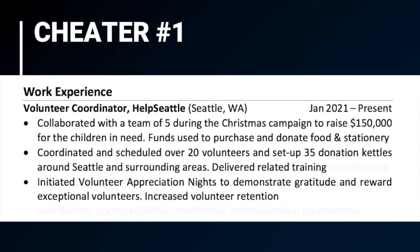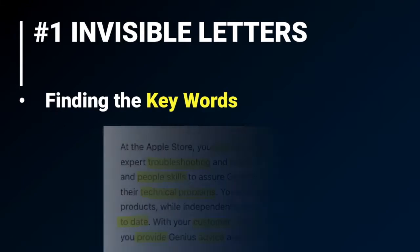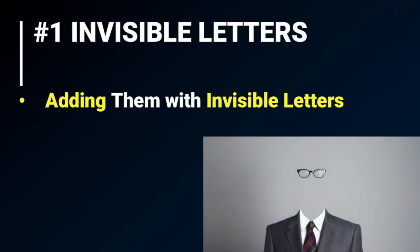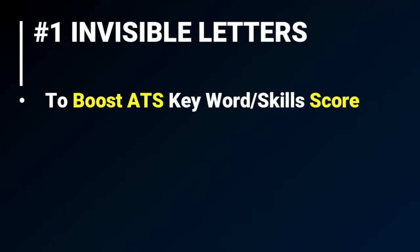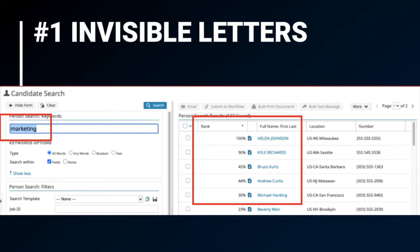Let's take a look at some different cheaters. Cheater number one — this individual is a volunteer coordinator at Help Seattle. By the way, these are not real people; I made them up just to demonstrate. Can you find it? Method number one is invisible letters. The idea is finding the keywords on the job description and adding them on your resume with invisible letters — meaning adding them in white, which is the same color as the background of your resume. This boosts your ATS keyword and skill score, because the more times an individual uses a keyword like 'marketing,' the higher their score.